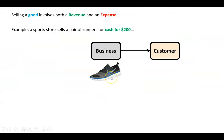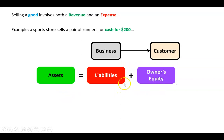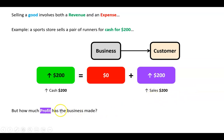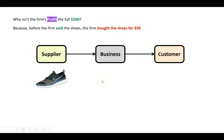When a business sells something it involves both a revenue and an expense. For example, a sports store sells a pair of runners for $200 cash. Forgetting about GST for a second: the customer gives the business $200, and in our accounting equation assets equal liabilities plus owner's equity, so we have $200 cash - an asset going up - and we made a sale, which is a revenue increasing owner's equity. But we also know we can't say we made a profit of $200, because before selling those shoes we had to buy them. Let's say we got them from the supplier for $50.